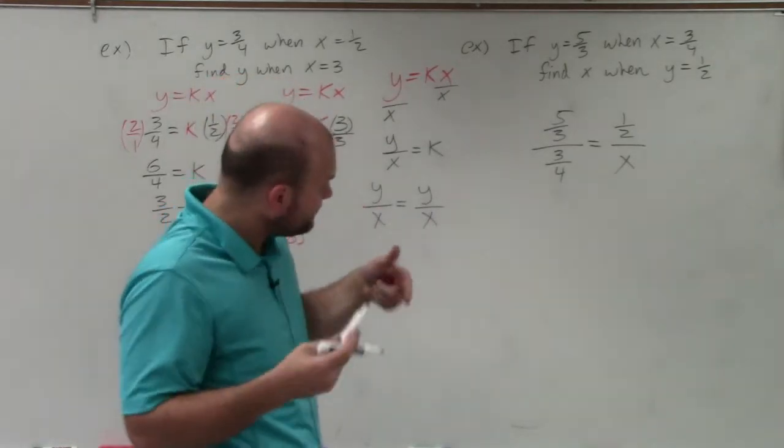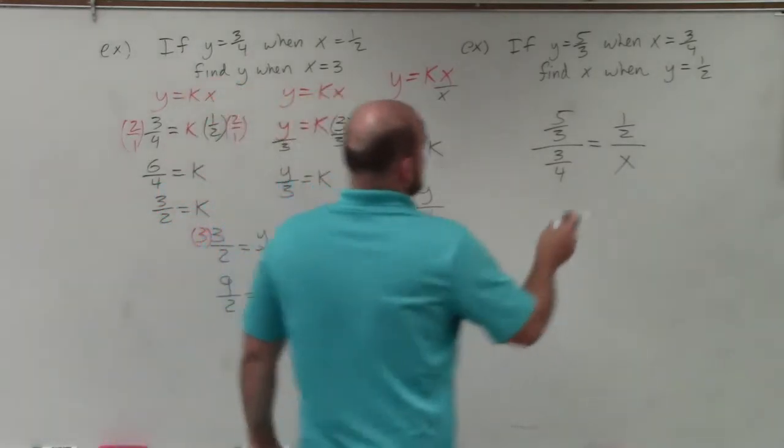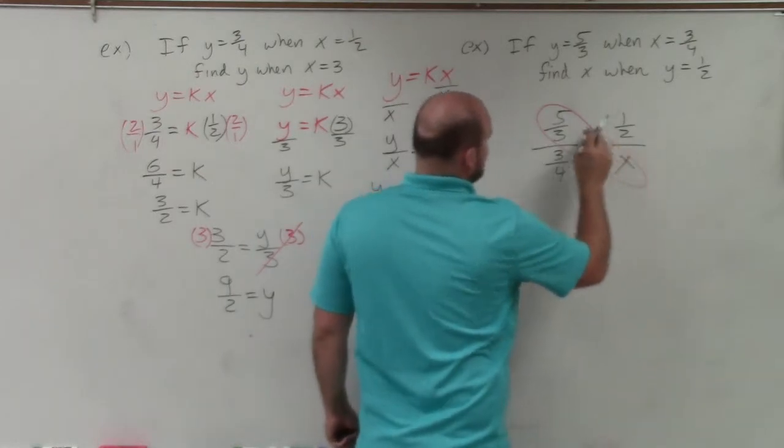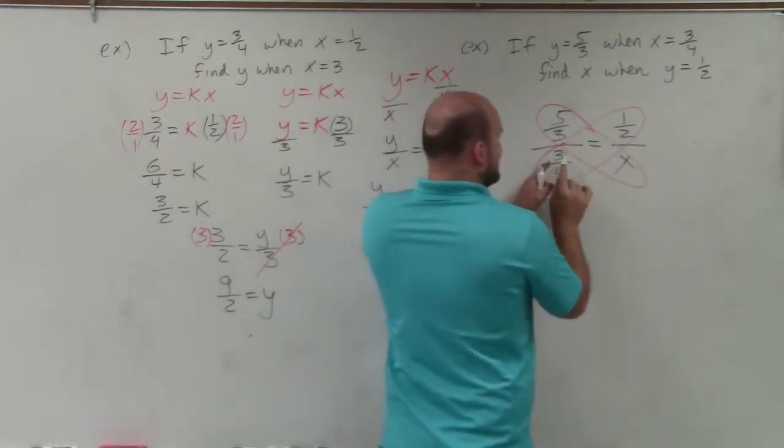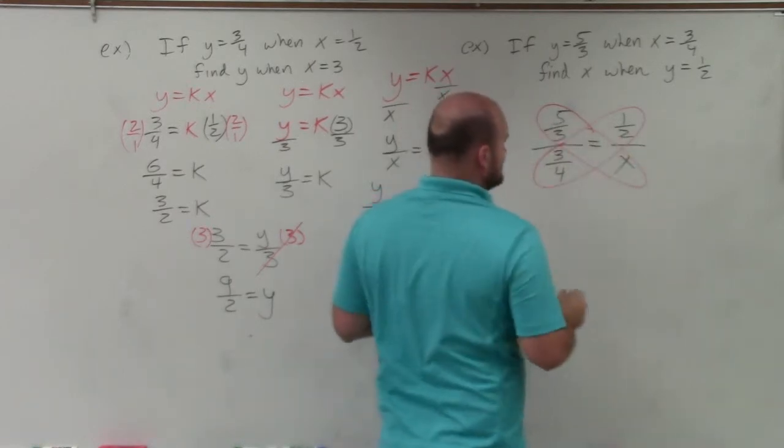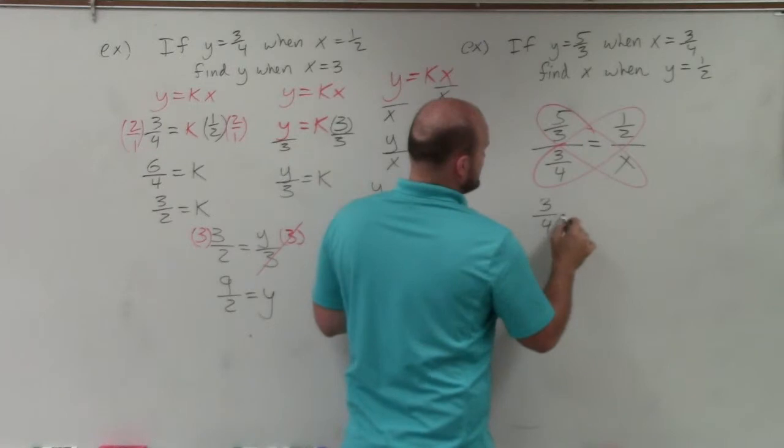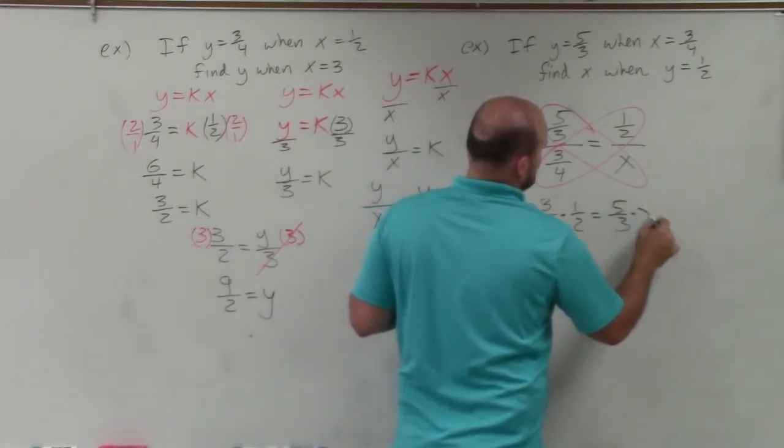Well, you can use your inverse operations we've discussed before. We could also use the cross product. So if I'm going to apply the cross product here, which I think would probably be the best to use, I'm basically going to take the product of 3 fourths times 1 half and set it equal to 5 thirds times x. So I have 3 fourths times 1 half is equal to 5 thirds times x.